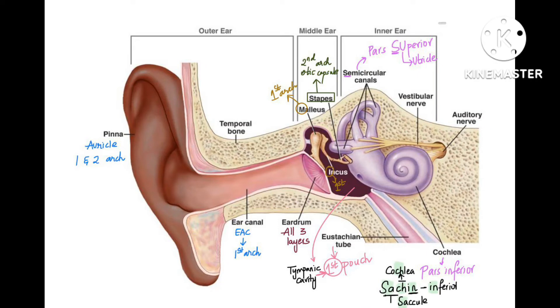Whereas cochlea and saccule are from pars inferior. Remember it as sachin. Sachin: S-A is saccule, C-H is cochlea, and I-N is inferior. The sachin name has everything in it.